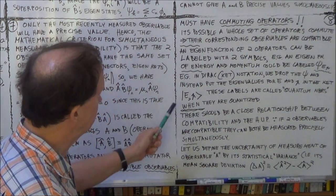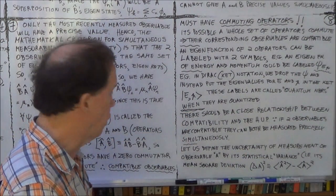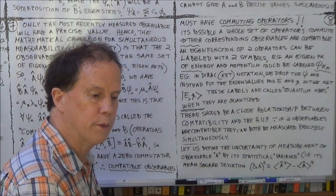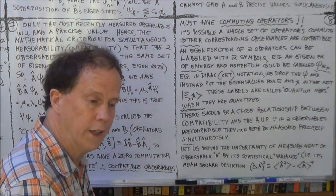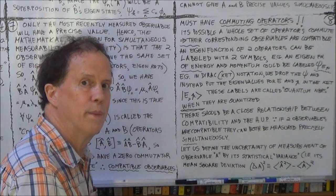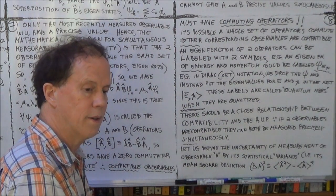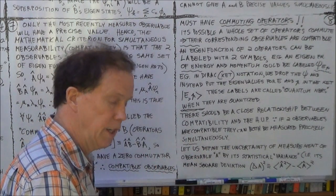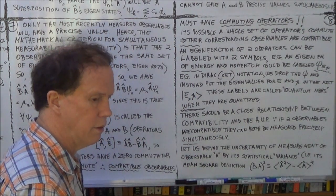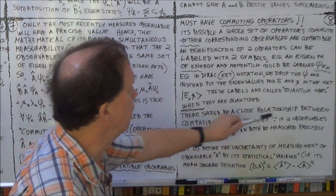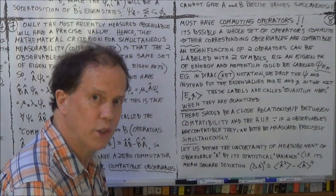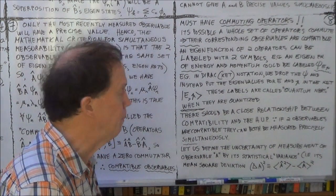So, we now have a criterion, a compact criterion, in terms of the commutator, to judge whether two observables are compatible or not. Now, we know the HUP, the Heisenberg Uncertainty Principle, is an instance, or an example, of incompatibility. So, intuition says, we should be able to form some kind of relationship between the Heisenberg Uncertainty Principle and the commutator. Does that sound plausible?